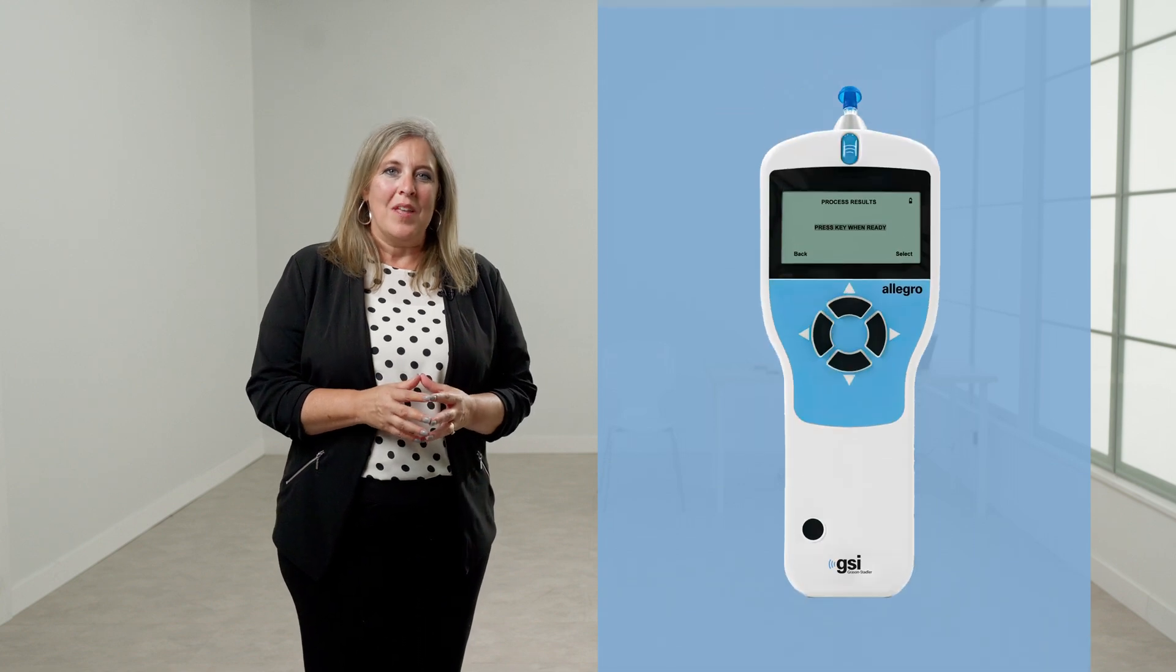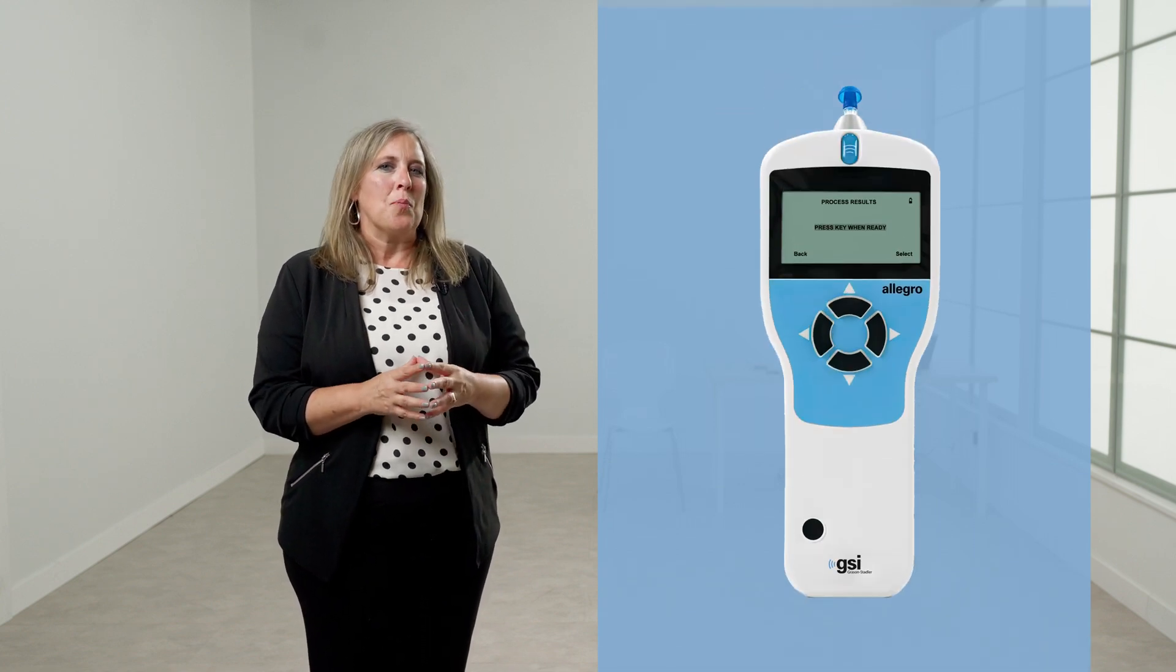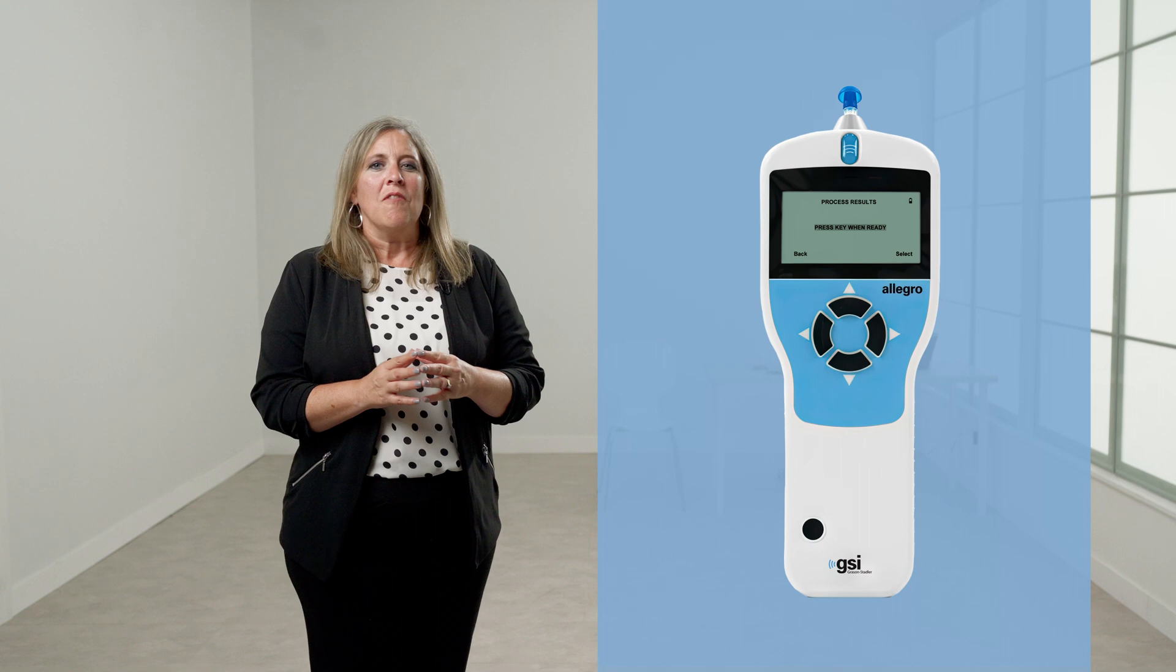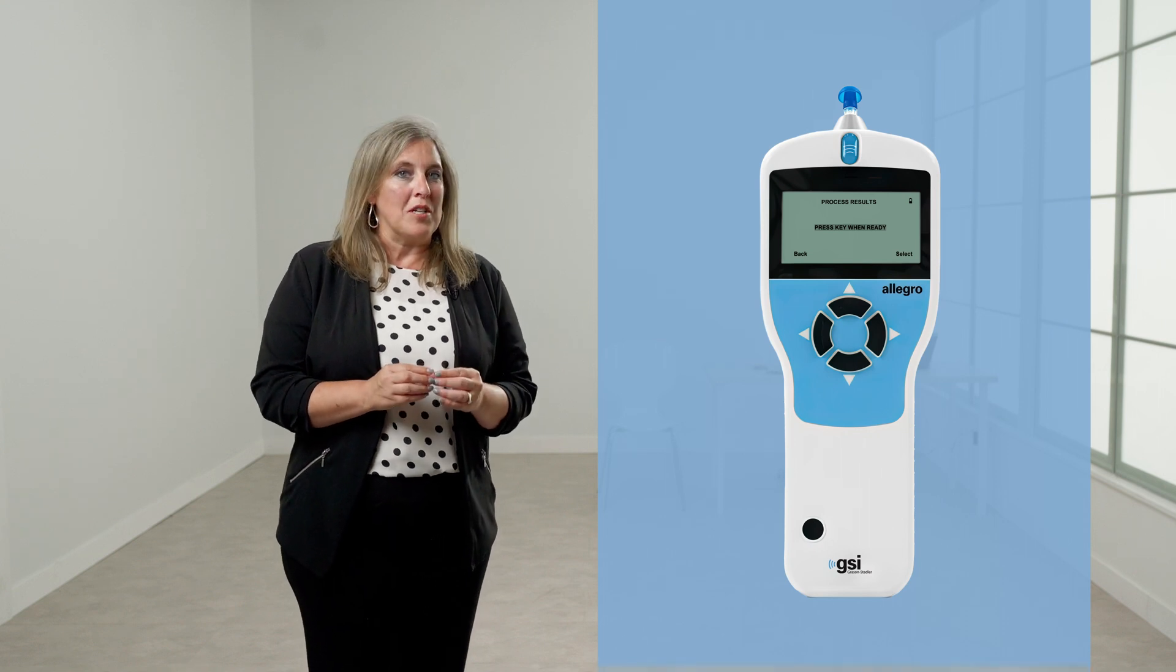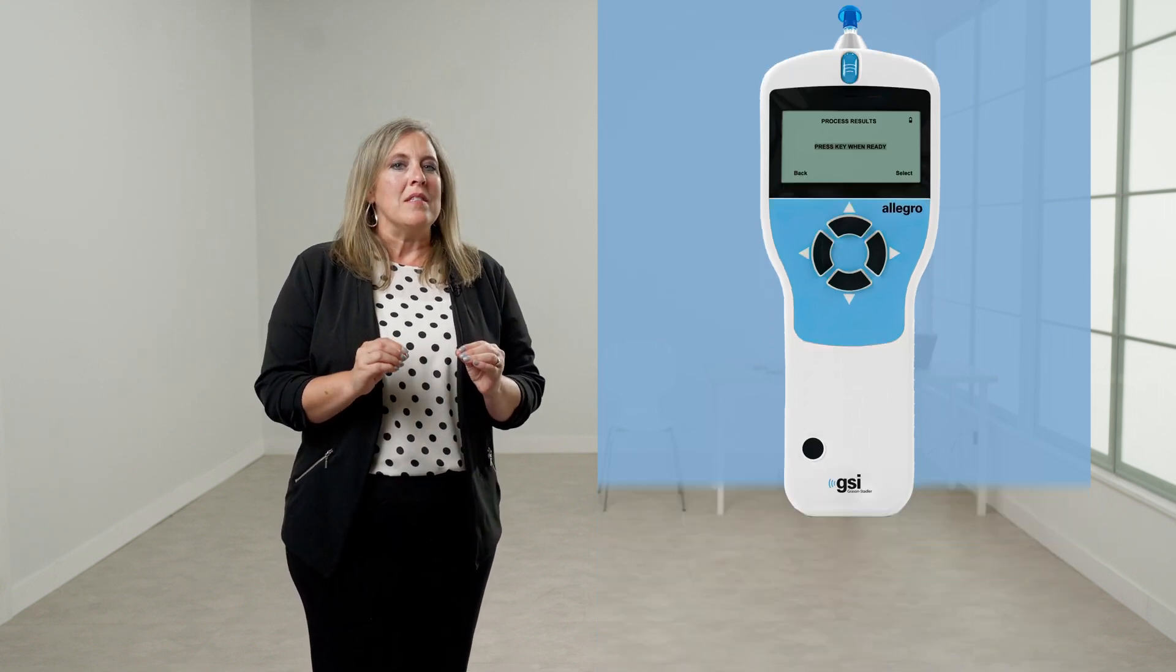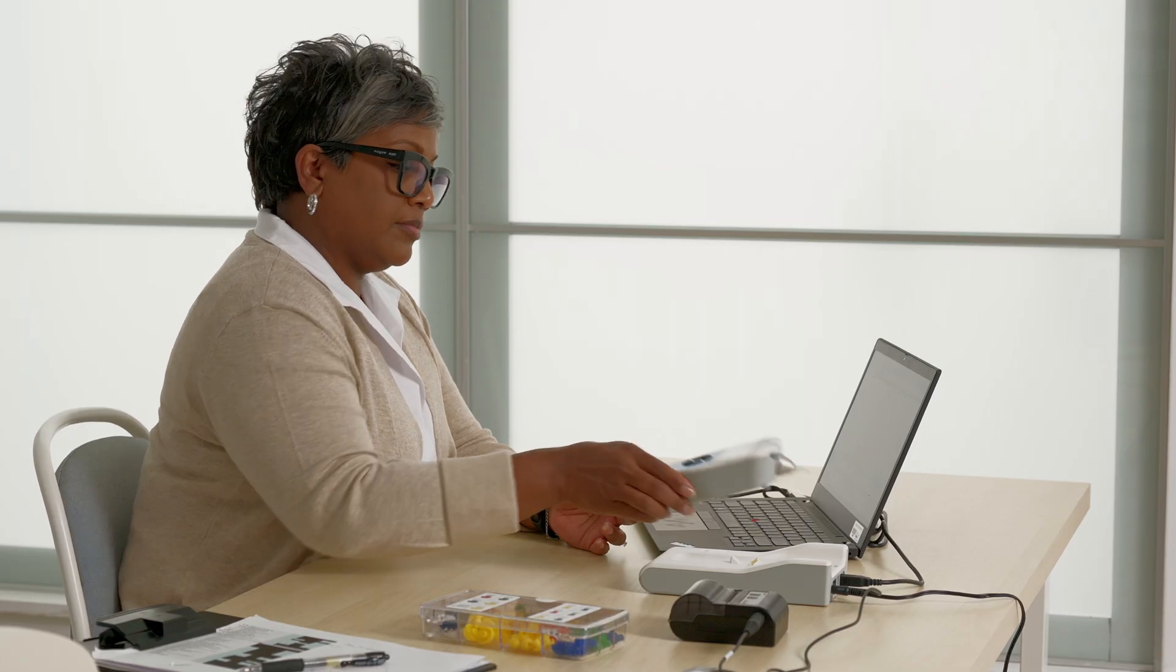When the test is completed and the results are accepted, the process results menu will be displayed. From here, it is possible to print or save the results, view the test again, or return to the main menu. Please note that the results of the last test performed remain available even if the Allegro has been turned off. However, the results of the last test will be erased as soon as a new test is started. Test results should be saved to the internal database or printed to ensure that data is not lost.